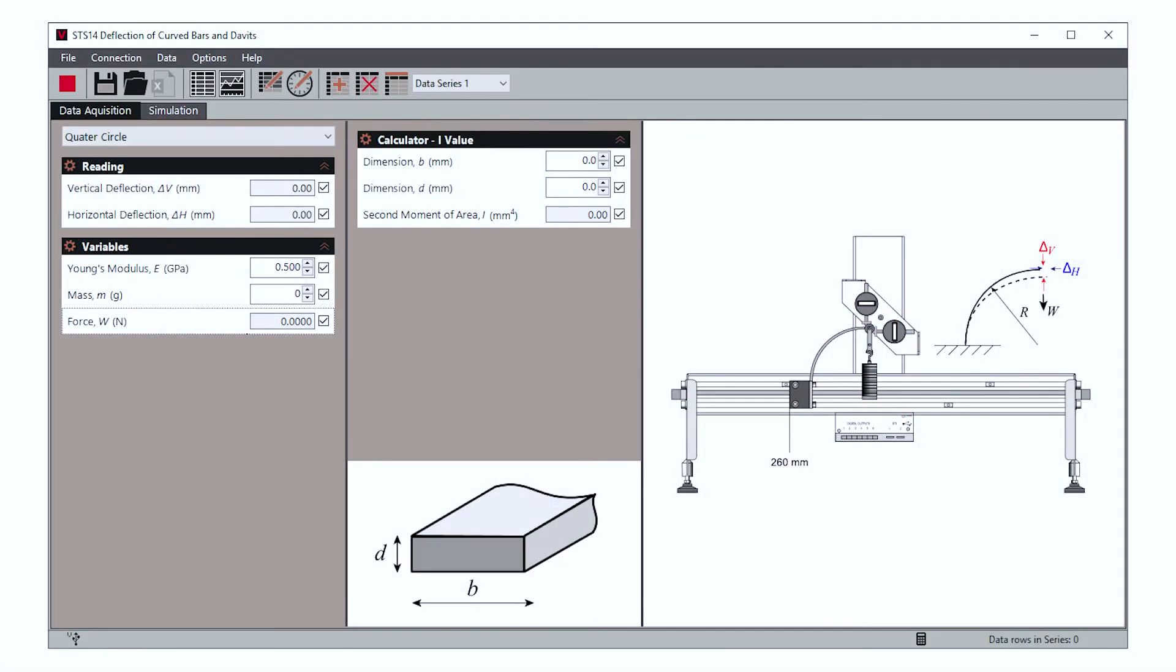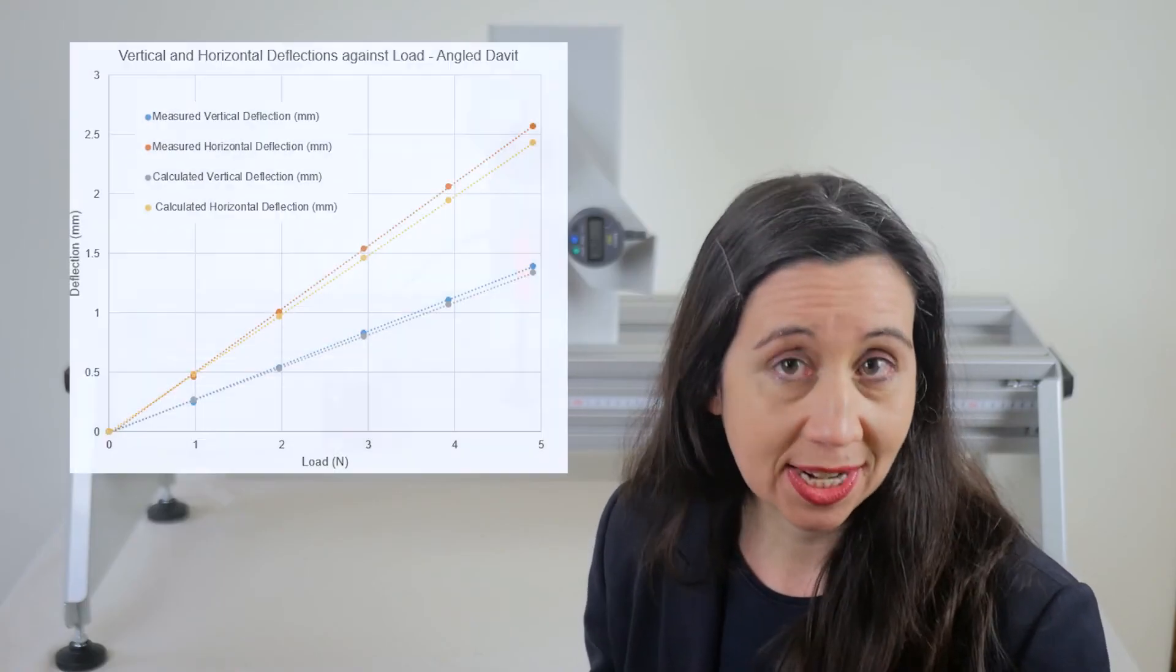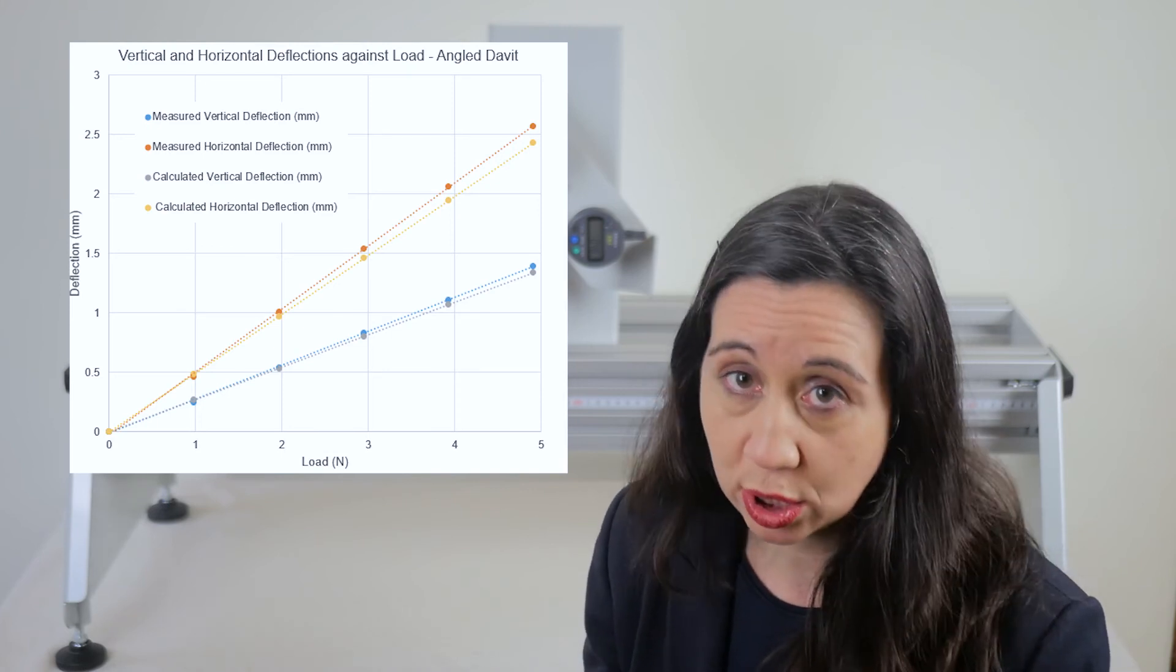With a table of results either manually filled out or collected within the Versatile Data Acquisition Software, you can calculate the I value of the davit, chart deflection versus load, and confirm the relationship between the two. Add the theoretical values and see if they match up.